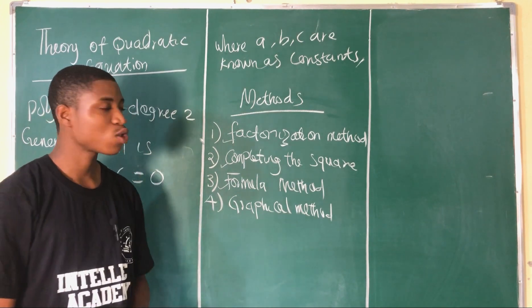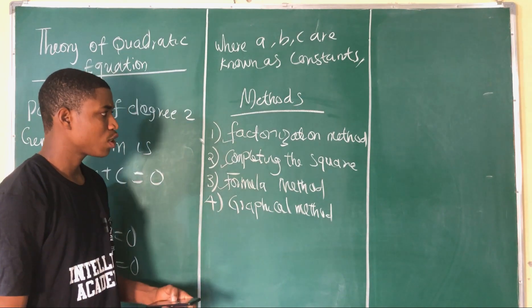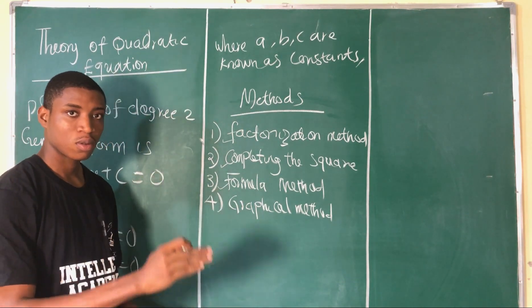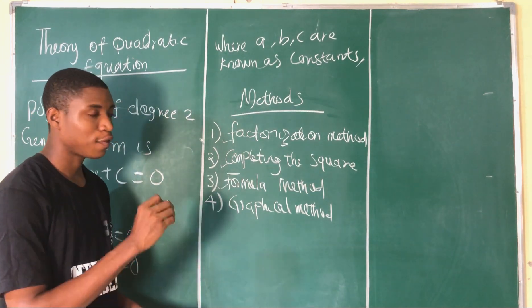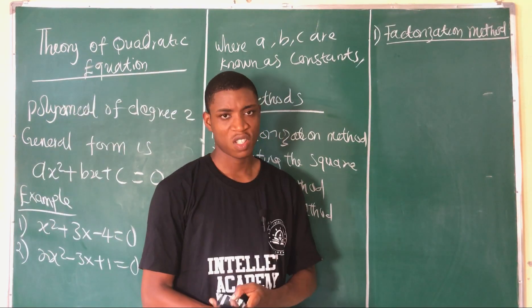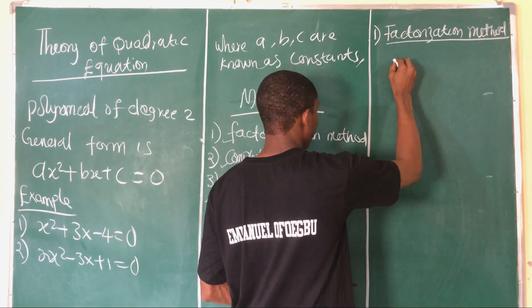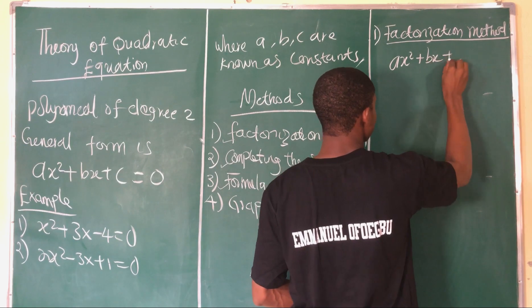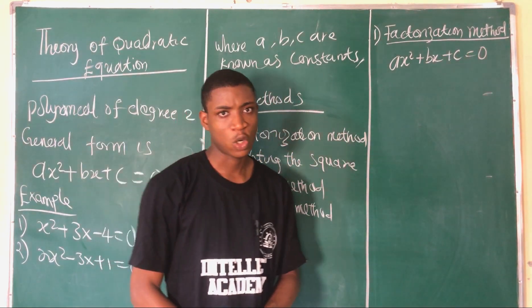First of all, we must know about the factorization method — it's very important as the first method for quadratic equations. The general form of the quadratic equation is ax² + bx + c = 0. Under the factorization method, there are two cases: case one where a = 1, and case two where a > 1.